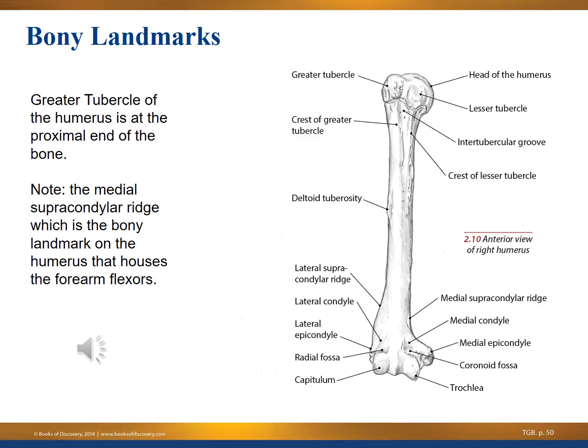You are looking at the humerus, the long bone of the upper arm. The greater tubercle and lesser tubercle are at the proximal end of the bone — proximal being closest to the body, as opposed to distal, which is farthest away. Note in the lower right-hand corner the medial supracondyle ridge, which is the bony landmark on the humerus that houses the forearm flexors. You probably want to remember that.